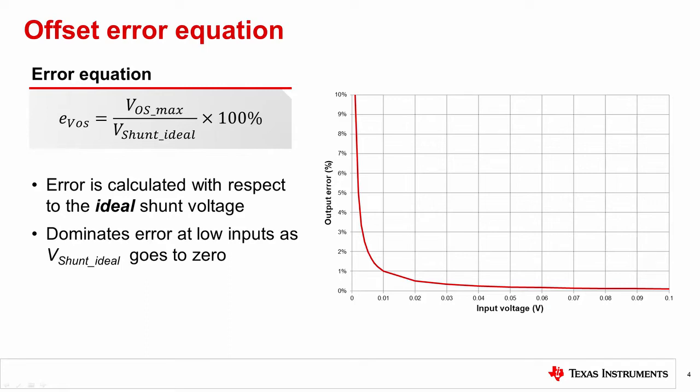Input offset voltage is typically the largest factor affecting a solution's accuracy at low inputs. This is because V shunt ideal becomes very small, to the point where VOS is very large by comparison. You can see an example of this in the error plot on the right. Minimizing this error is often the most important requirement for current sensing circuits.